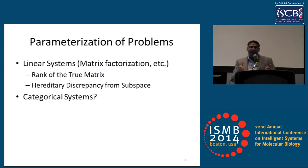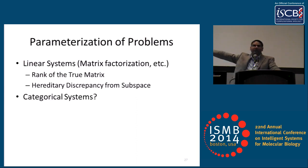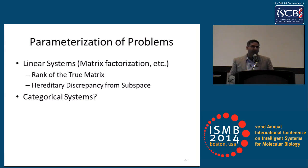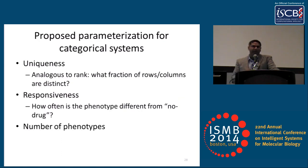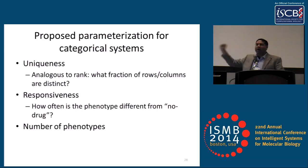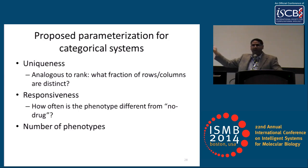To characterize this active learning, we need a parameterization analogous to what we do for linear systems. For a matrix factorization problem, we can say here is the rank of the true data. It's not obvious what to do for a categorical system. So we've proposed a parameterization of categorical experiment spaces with the following three parameters: uniqueness — how many factors are there, analogous to rank; how responsive were the targets to the conditions, that is how often do they change from a vehicle or nominal state; and the total number of phenotypes in the system.